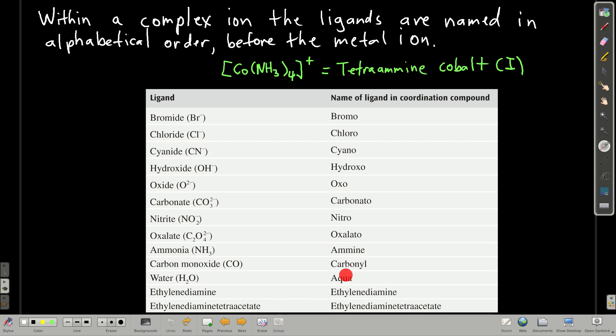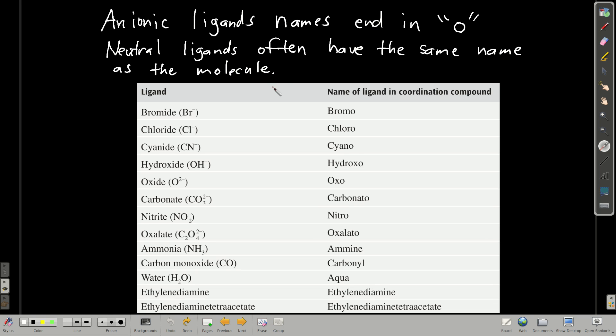Here are the names of some common ligands. If the ligand is an anion, its name's going to end in O. If it's a neutral compound, then it's going to have a lot of times the same name as the molecule. All of these ligands have negative charges. They all end in O: bromo, chloro, cyano, hydroxo, oxo, carbonato, nitro, oxalato. And then the neutral ones, ammonia is called amine, carbon monoxide is called carbonyl, water is aqua, but ethylenediamine is called ethylenediamine, and ethylenediamine tetraacetate is called ethylenediamine tetraacetate, or EDTA and EN.